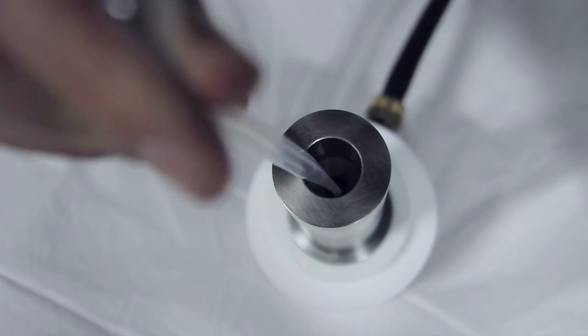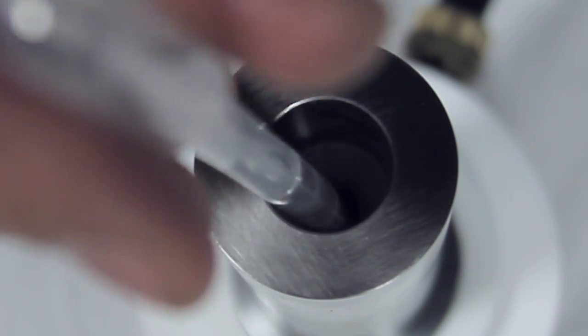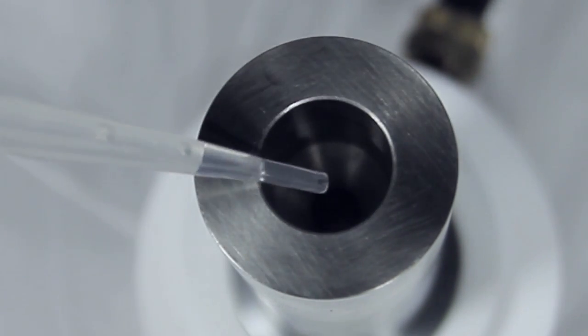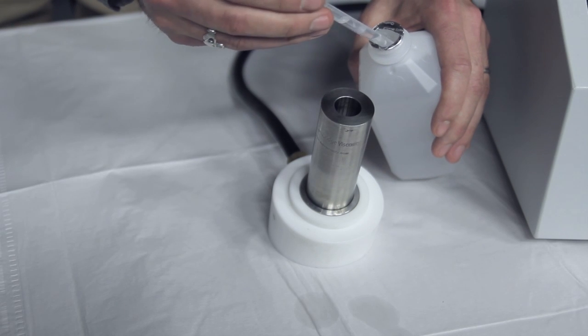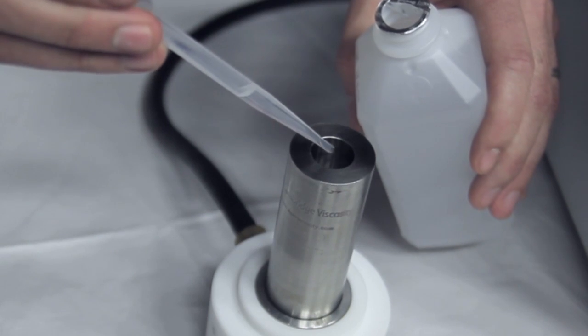Insert the pipette into the measurement chamber. Squeeze the pipette to remove as much sample as possible. Repeat as necessary. Add a splash of solvent to the measurement chamber to clean the residual sample material.